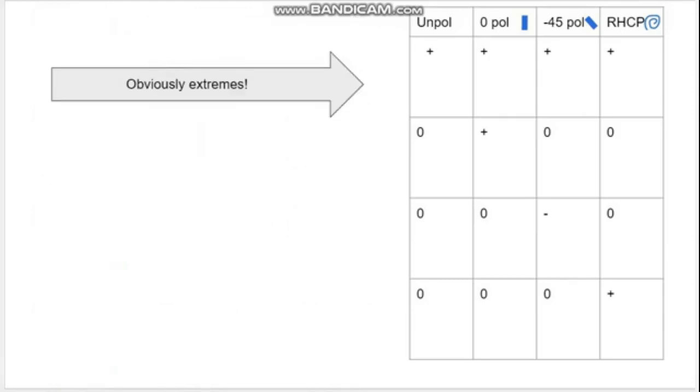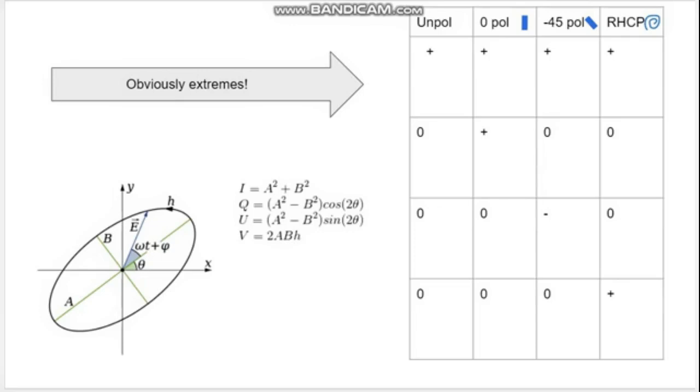However, these are obviously extremes. It's very rare that you set a dipole up to the sky and you've exactly aligned it with a zero or only a negative 45 or only a right-handed circular polarization. For this, it is interesting to introduce a concept called a polarization ellipse. Here you have an ellipse and a way to describe polarization you receive that is an elliptical polarization or a combination of linear and circular polarization. You have h, which is the handedness of it, a and b, which are the major and minor axes, and theta, which is the angle of tilt off from a perfect circle.